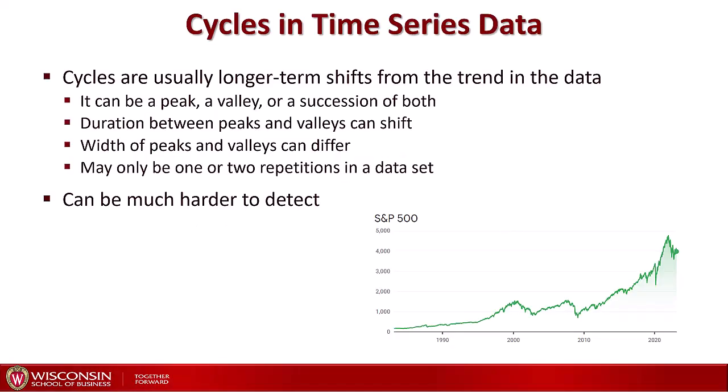Cycles are usually longer-term shifts from the trend in the data. You can have a peak above the trend, a valley below the trend, or a succession of both. The duration between these peaks and valleys can shift — you might have peaks succeeding each other or valleys succeeding each other. There is no absolute rule about this. The width of each peak and valley can also differ.